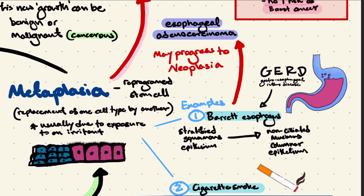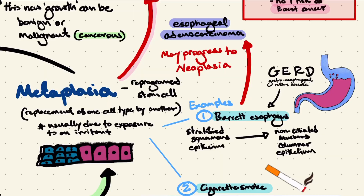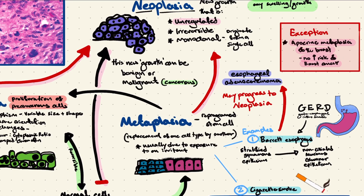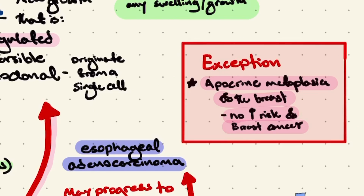On this histology diagram, we can clearly see the ciliated columnar epithelium gradually changing to stratified squamous epithelium. The second example is Barrett's esophagus, caused by gastroesophageal reflux disease. Here, stratified squamous epithelium of the esophagus is exposed to acid from the stomach due to reflux, and changes to non-ciliated mucinous columnar epithelium because this epithelium produces mucus, which is better equipped to deal with the acid. Metaplasia, like pathological hyperplasia, can progress to dysplasia or neoplasia — for example, Barrett's esophagus can progress to esophageal adenocarcinoma. However, apocrine metaplasia of the breast leads to no increase in the risk of breast cancer.